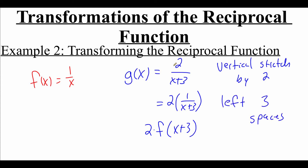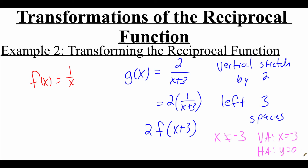Now as we're thinking about the domain of this function g, to avoid 0 on the bottom of the fraction, we need to make sure that our x value is not negative 3. And if we type this one into our calculator, we should see a vertical asymptote at x equals negative 3. We haven't shifted our graph up or down, so we're still going to see that horizontal asymptote at y equals 0.